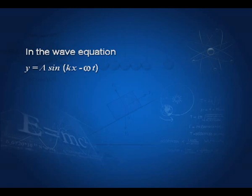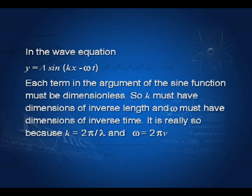This is a familiar equation — the wave equation. It is written as y equal to A sin(k x minus omega T). Now, each term in the argument of the sine function must be dimensionless. So k must have dimensions of inverse length and omega must have dimensions of inverse time. Therefore, you realize that k equals 2 pi divided by lambda and omega equals 2 pi times nu.